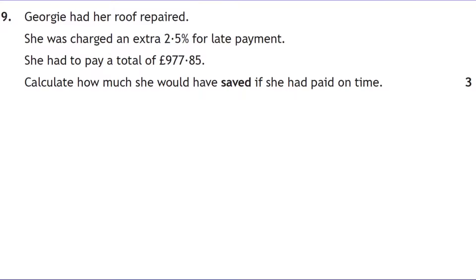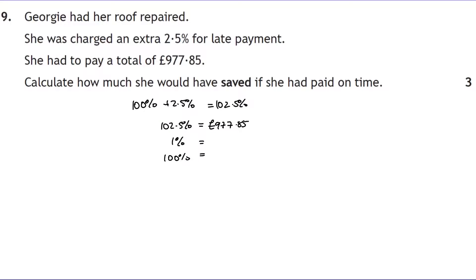Question nine: Georgia was charged an extra 2.5% for late payment and paid £977.85. She originally owed 100% but ended up paying 102.5%. We need to find the original 100% payment, so we work backwards — dividing by 102.5 to find 1%, then multiplying by 100.